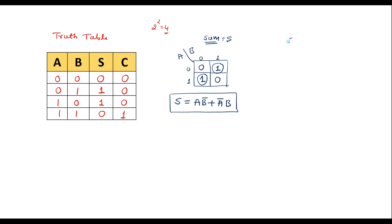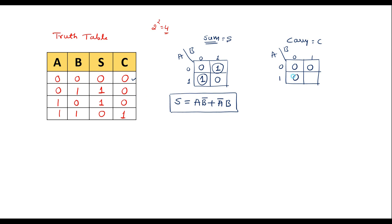Similarly, let me simplify for carry using the same 2×2 K-map. Variables are A and B. When A=0,B=0 carry=0; when A=0,B=1 carry=0; when A=1,B=0 carry=0; when A=1,B=1 carry=1. There is only one single 1. With respect to the row we have A, and with respect to the column we have B. Therefore, carry C = AB.